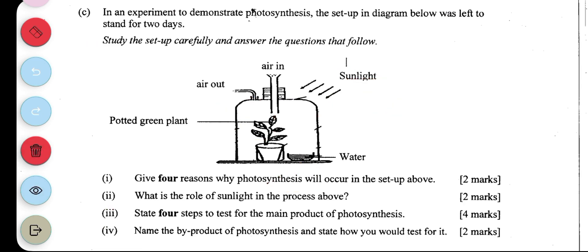Name the byproduct of photosynthesis and state how you test for it. The byproduct of photosynthesis is oxygen. How do you test for oxygen? Oxygen supports burning, so if something supports burning, you take a glowing splint closer to it.